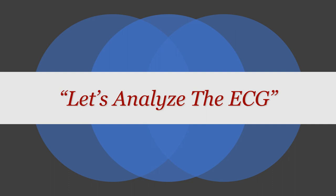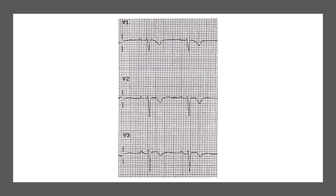Let's go back to our ECG and analyse it. Looking at V1 to V3, the first abnormality is T-wave inversion. T-wave inversion can be asymmetrical or symmetrical. Asymmetrical T-wave inversions are abnormal but can be relatively benign — associated with strain pattern or left ventricular hypertrophy. The symmetrical ones are the concerning ones, associated with PE, ACS, and other serious conditions. Looking at our ECG, the T-wave inversion here is symmetrical.